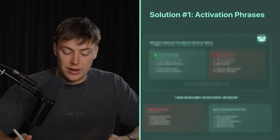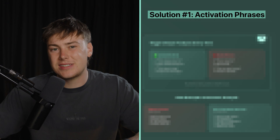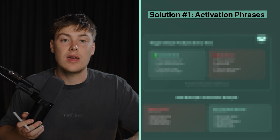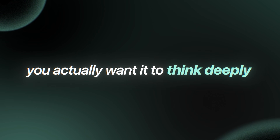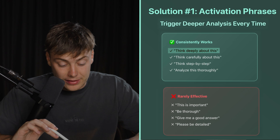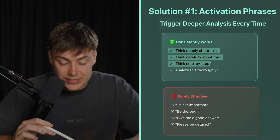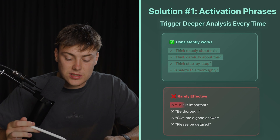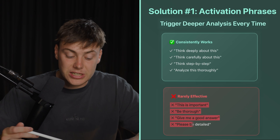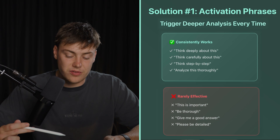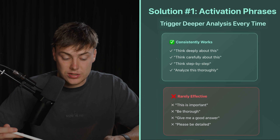Solution number one: activation phrases. This is a very easy way that you can get deeper responses from GPT because you don't want a shallow answer — you actually want it to think deeply. These are some sentences that you can put into your prompt to elicit a better response: "Think deeply about this," "Think carefully about this," "Think step by step," "Analyze this thoroughly" — versus weaker phrases like "This is important," "Be thorough," "Give me a good answer," or "Please be detailed." That small change in phrasing has made a huge difference.